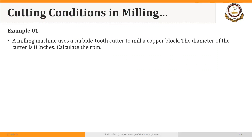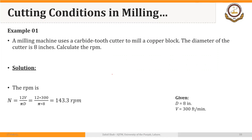Example: a milling machine uses a carbide tooth cutter to mill a copper block. The diameter of the cutter is 8 inches. Calculate the RPM. We look up the recommended cutting speed from the tables; from such a table, the feed is found to be 30 feet per minute. Using 12V over π·D, this turns out to be 143 revolutions per minute. Practically, we select a value closer to 143 depending on the values available on our milling machine.